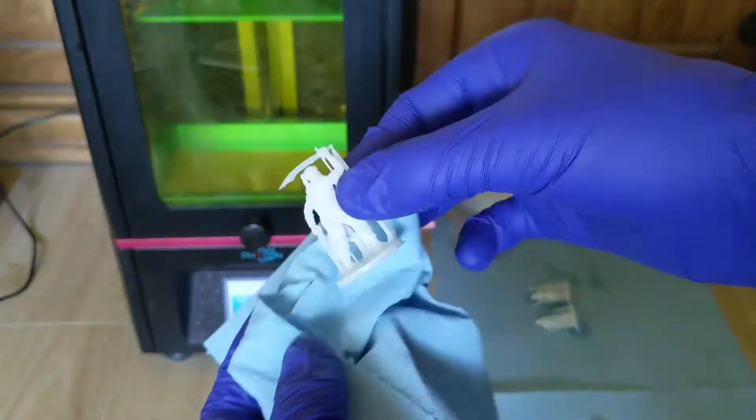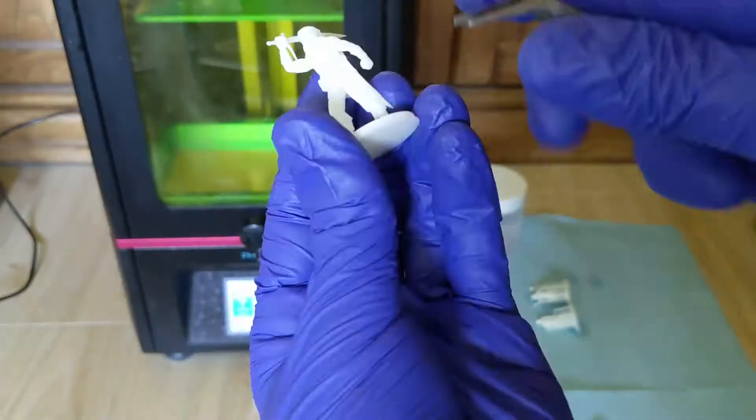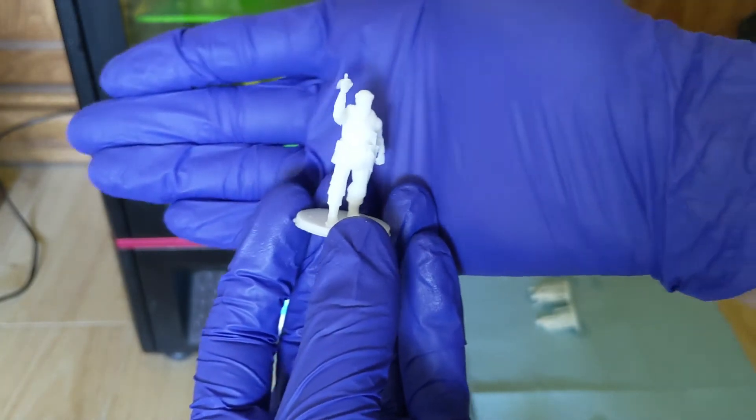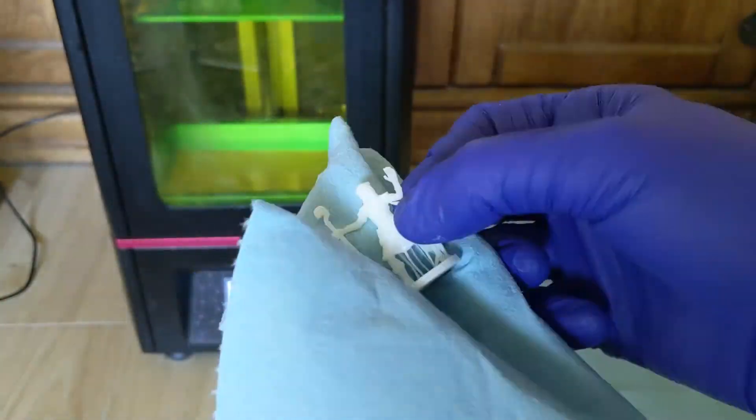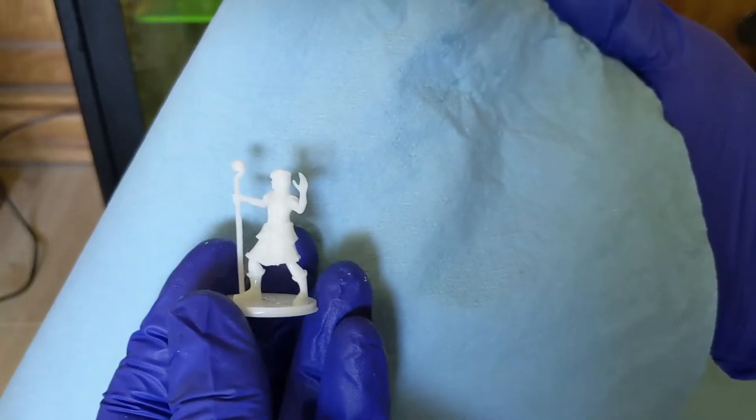I then carefully remove the supports. Any of the smaller ones, I will use some tweezers to help get those out, but I will just do that for all of them, until they look like great little miniatures that we can then see how well they hold up against the tile test.